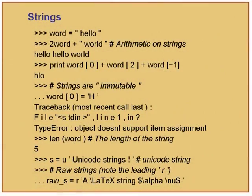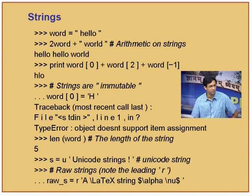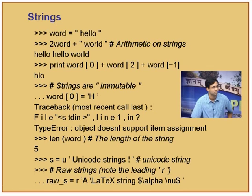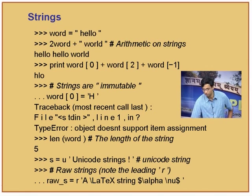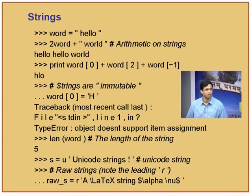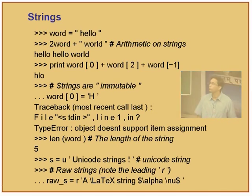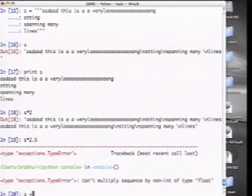Strings have a bunch of methods and things you can do with them. If the variable word is bound to the string 'hello', I can say 2 times word plus word, which produces hellohellohello. If you multiply a string with an integer, it repeats the string that many times. But if you multiply by a fraction like 2.5, you get an error because there is no meaning for half a string. You can add strings - s plus s gives two strings concatenated. Obviously you cannot subtract strings.